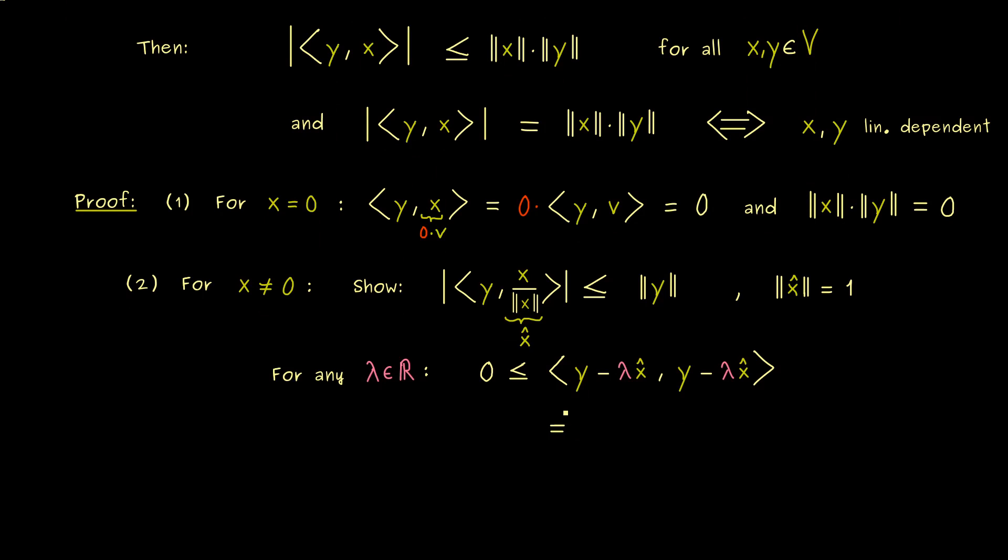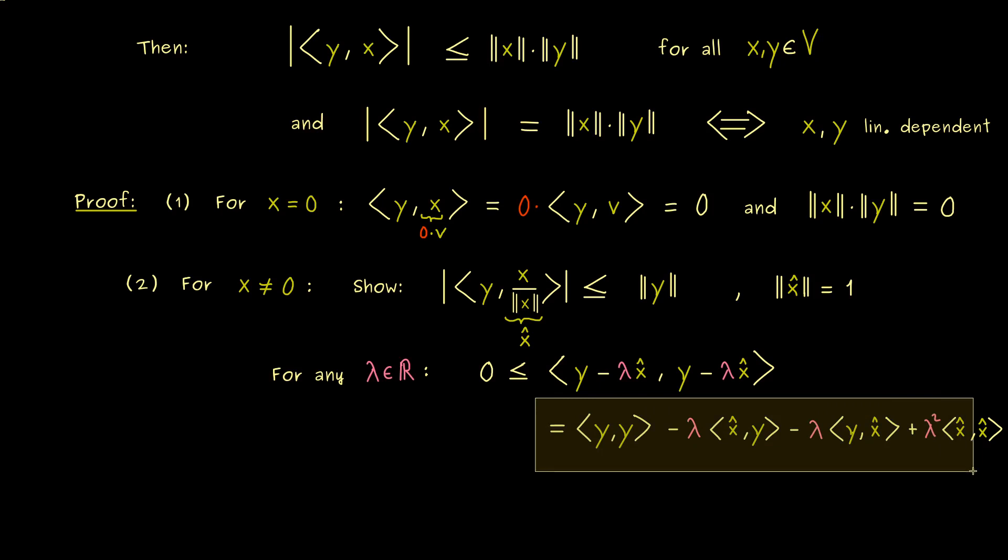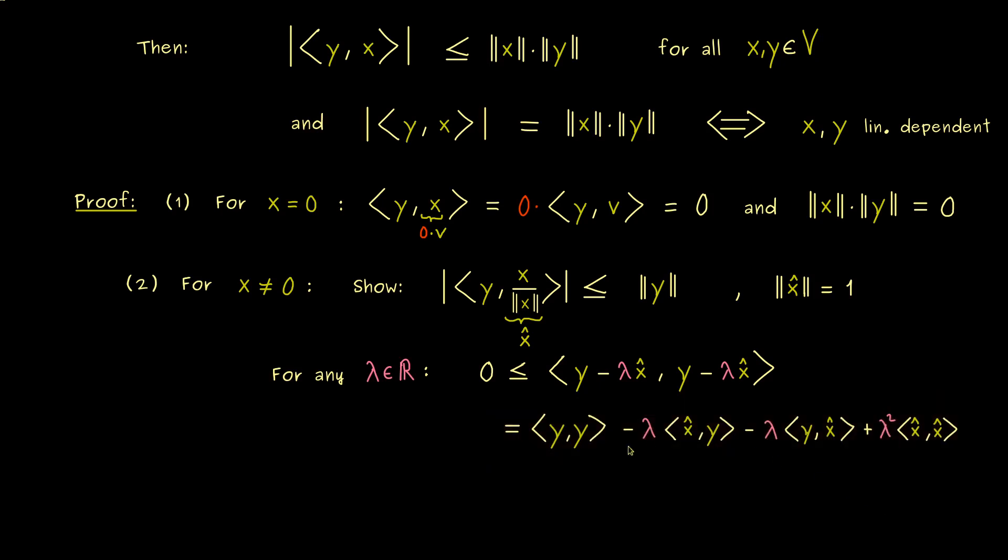And now we can simply split the whole thing up by using the linearity in both factors. There, please don't forget, the inner product is only conjugate linear in the first factor, but this is not so important here because we only choose real factors. Hence, what we get here are exactly four terms and the first one is yy. Then we get minus lambda x hat with y and minus lambda times y with x hat. And then the last term is plus lambda squared x hat with x hat. So there you see, we have four terms and we can put the middle ones together.